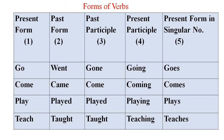Before understanding the tenses, it is necessary to know the forms of verbs. Look at the verb table. There are five forms of a verb. For example, 'go' is the first form, 'went' is the second form, 'gone' is the third form, 'going' is the fourth form, and 'goes' is the fifth form of the verb, and so on for other words.